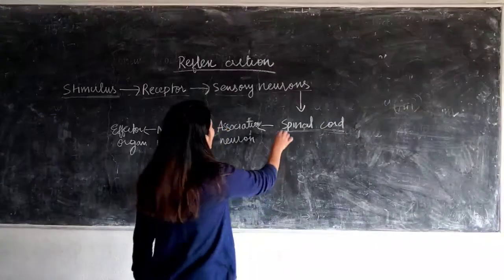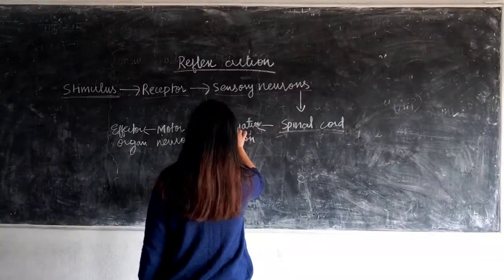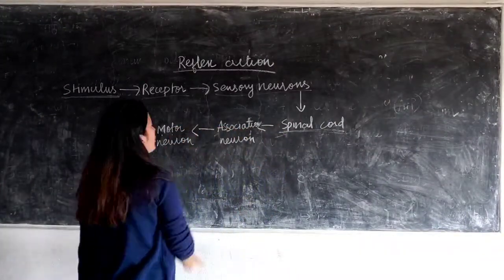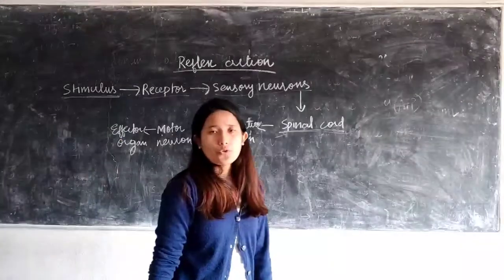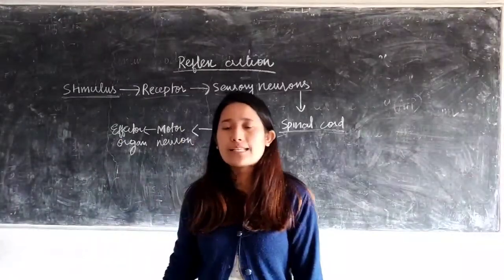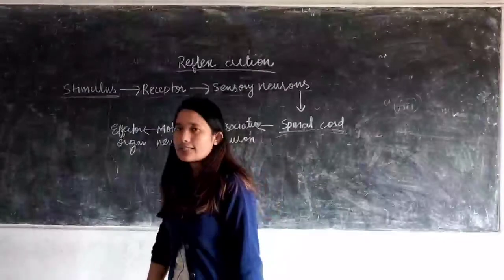Now from spinal cord through association neuron, then you have motor neuron. The function of the motor neuron we know, right? It can direct the message to the affected organs. The affected organ in your case would be your hand.